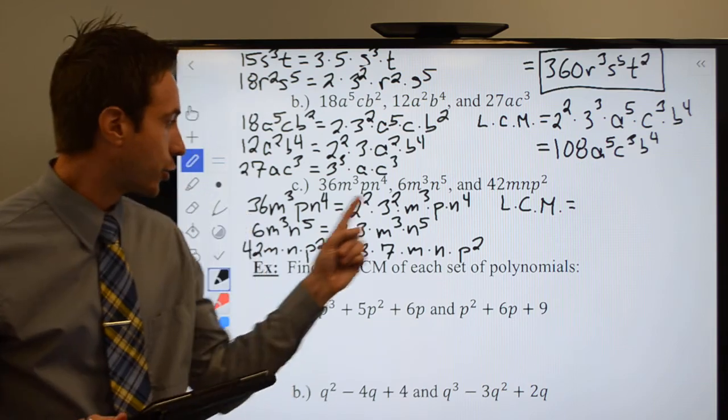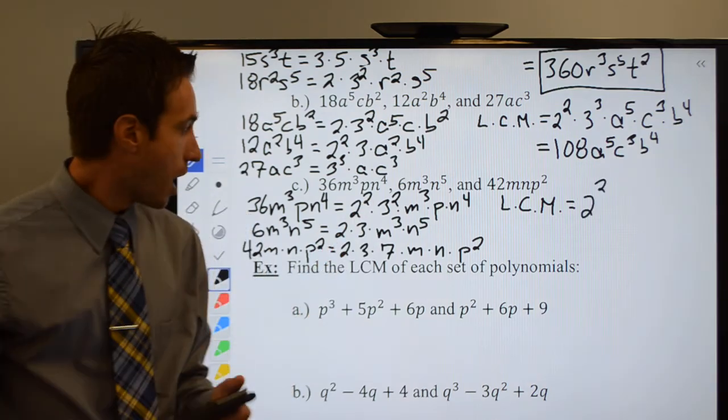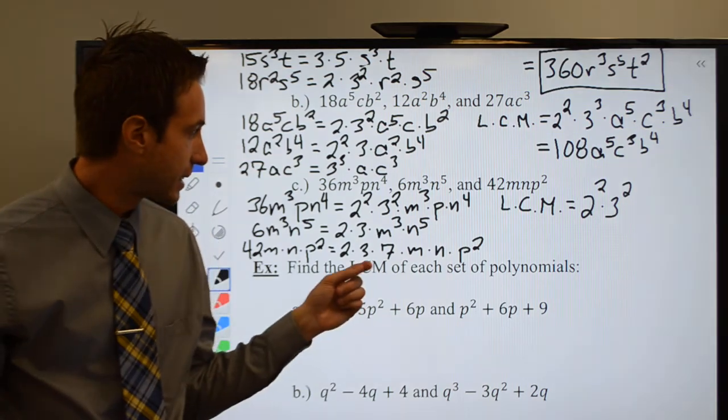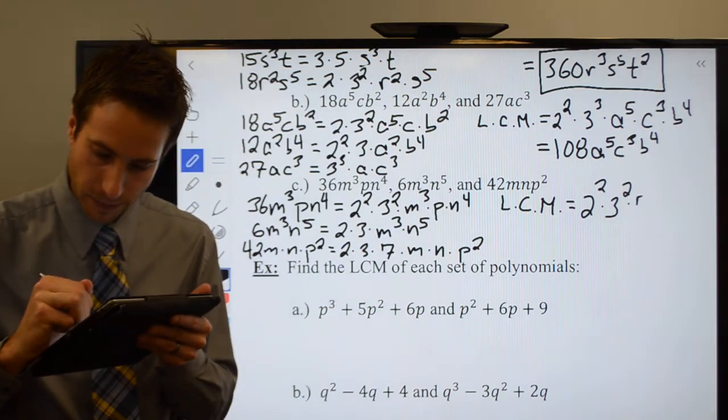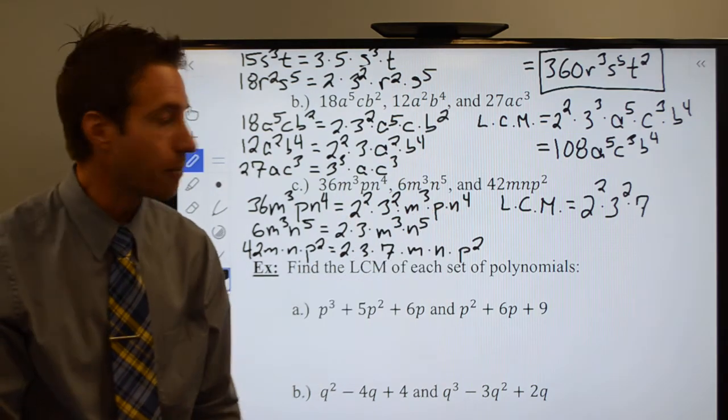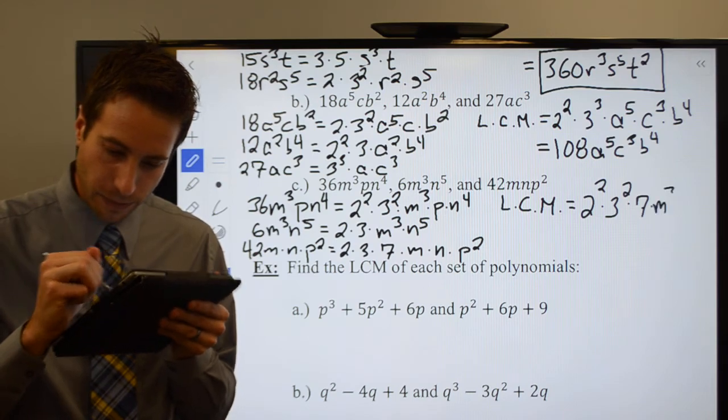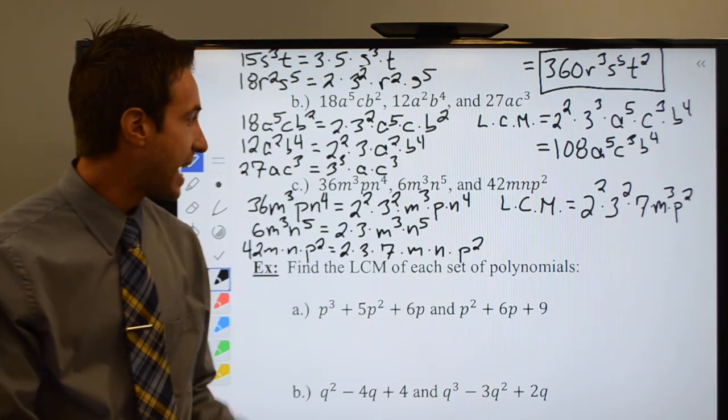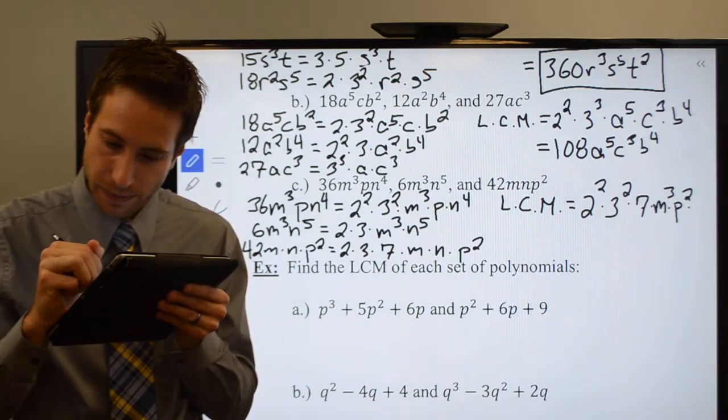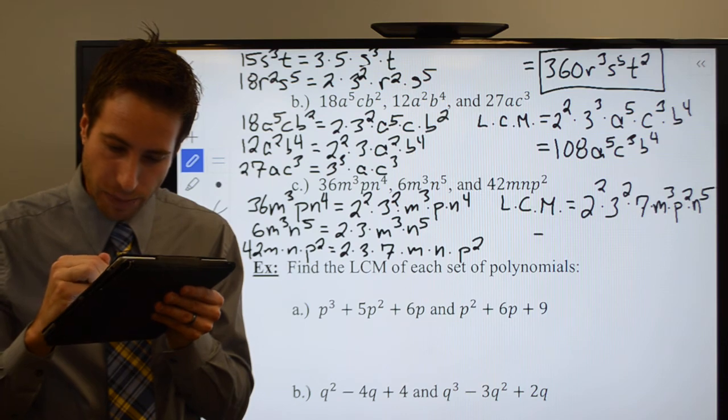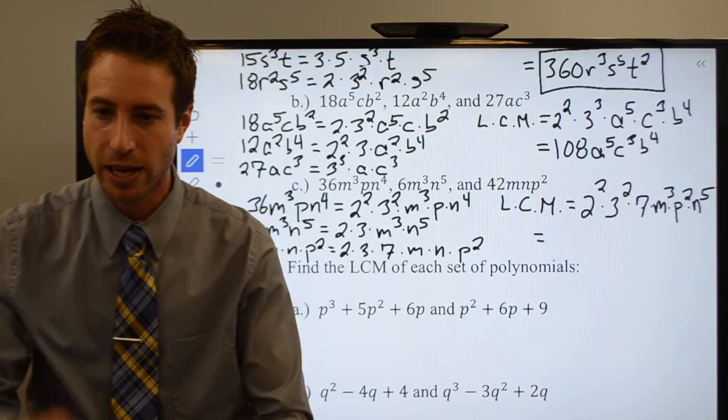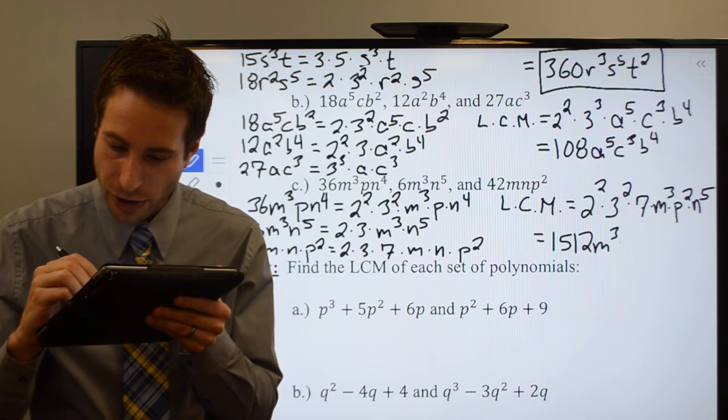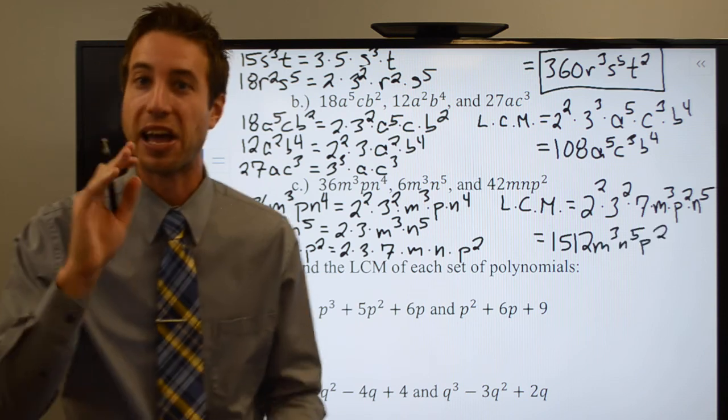That means that my LCM is equal to, well, 2², 2, and 2, I keep the 2². 3², 3, and 3, I keep the 3². And then I got 7. Alright, now my variables. M to the third, m to the third, m, we keep the m to the third. P, p², keep the p². And I got an n to the fourth, n to the fifth, I keep the n to the fifth. Alright, multiply those guys out. 2², 3², and 7. Quick calculator, I get 252. So my LCM is 252m³n⁵p².